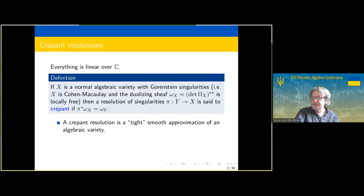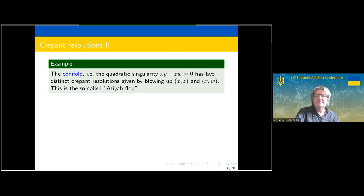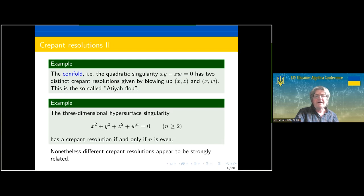Such resolutions need not exist, and if they exist they are usually not unique. To give a basic example: if you look at the three-dimensional conifold singularity xy = zw, that already has two distinct crepant resolutions by blowing up either of two singular subspaces, and the birational transformation between those two resolutions is a flop.